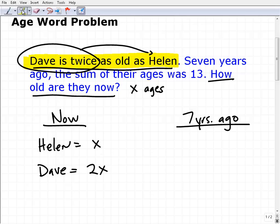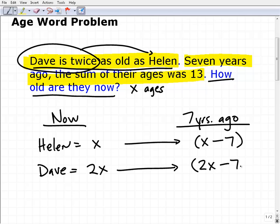Now let's take this to the next step. Seven years ago, the sum of their ages was 13. But before we get to the sum part, let's see how old they were seven years ago. If Helen is currently X years old, seven years ago she would be X minus seven. We'll do the same for Dave, so this is going to be 2X minus seven.